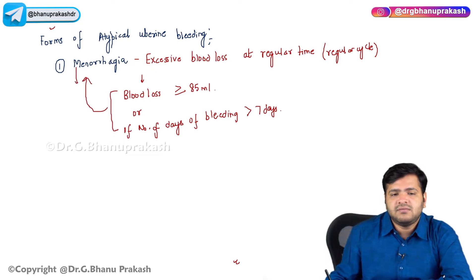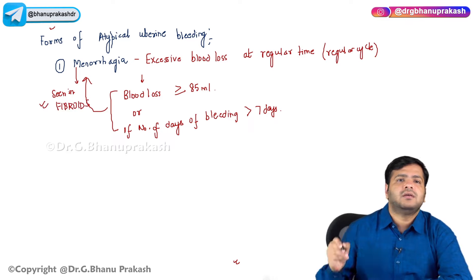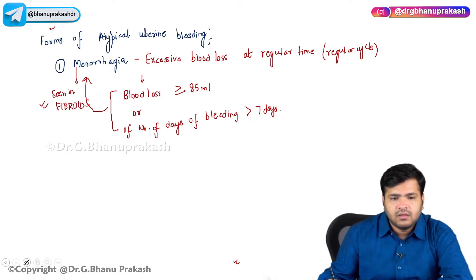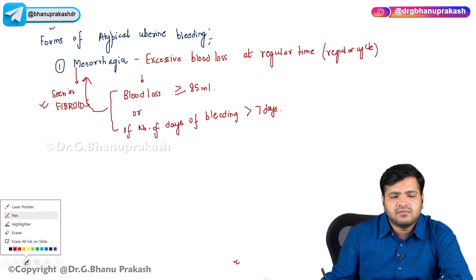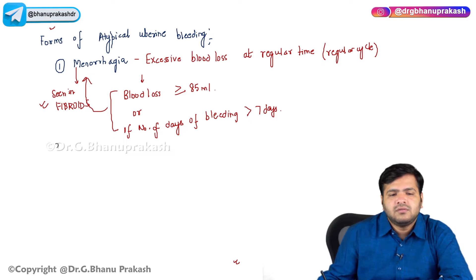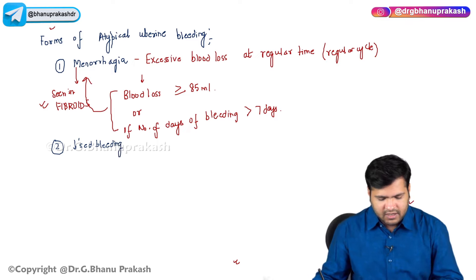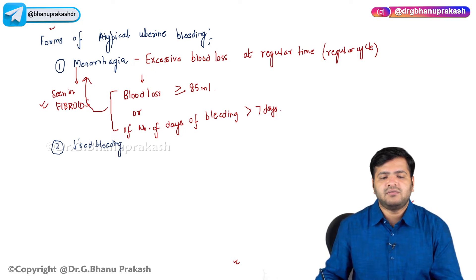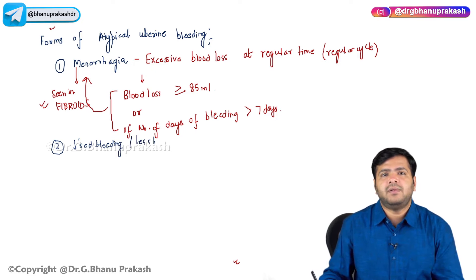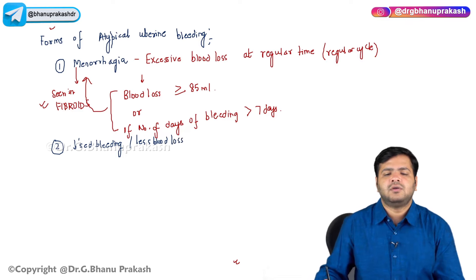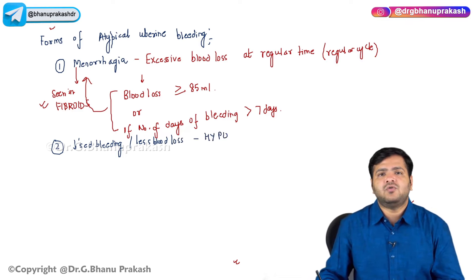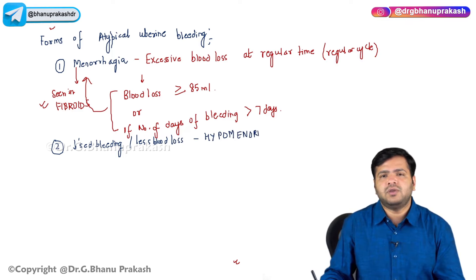This menorrhagia is typically seen in fibroids — female patients who are having fibroids. The second one is decreased bleeding, also called less blood loss, which is called hypomenorrhagia.